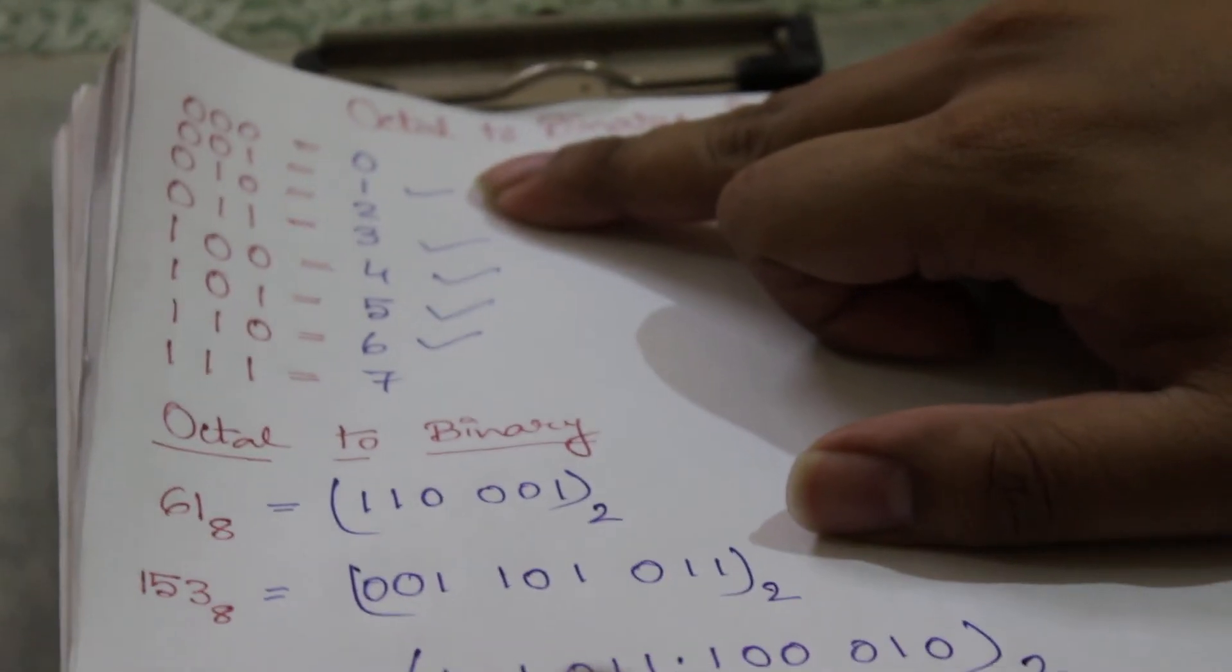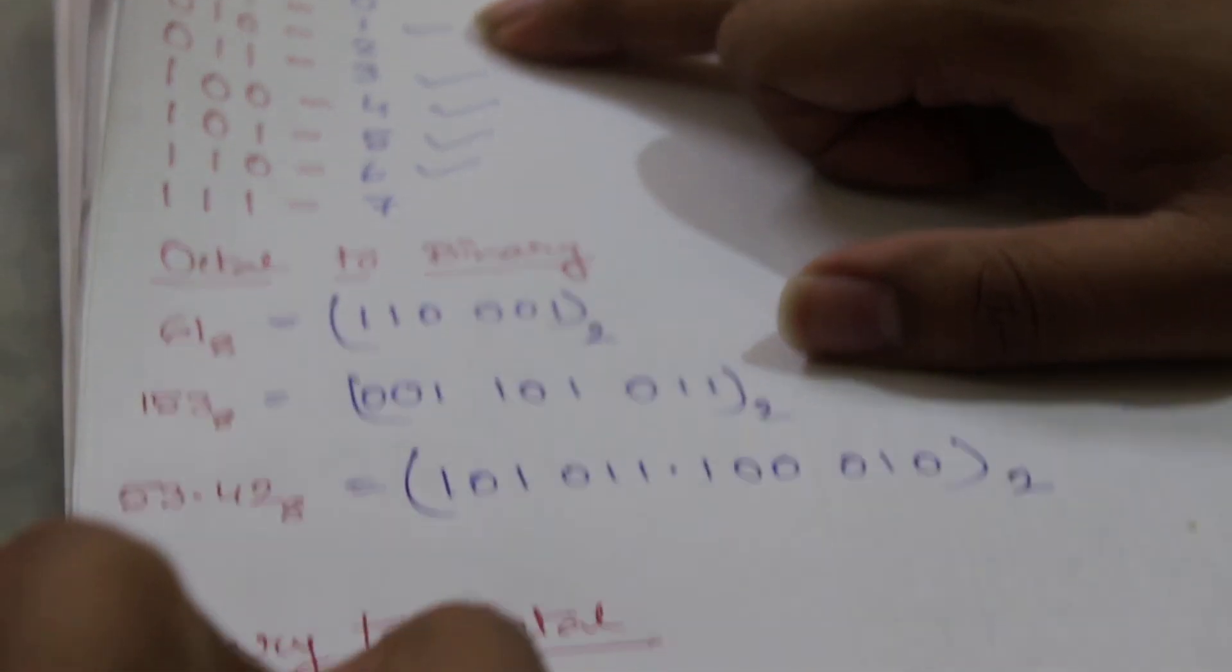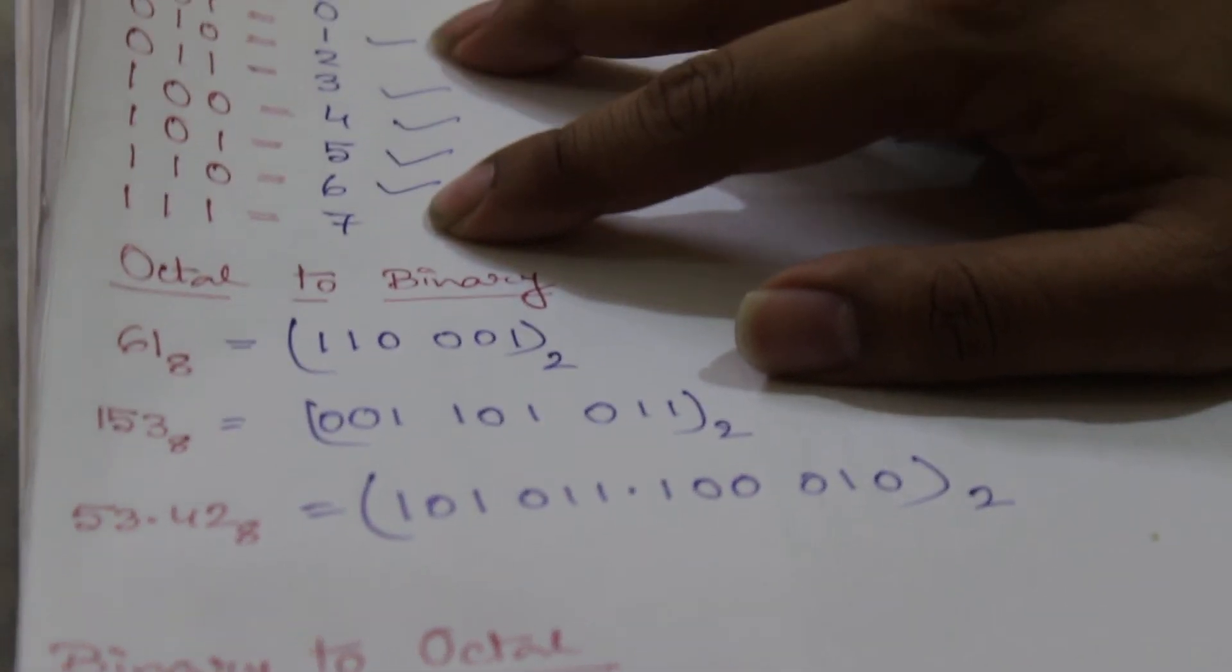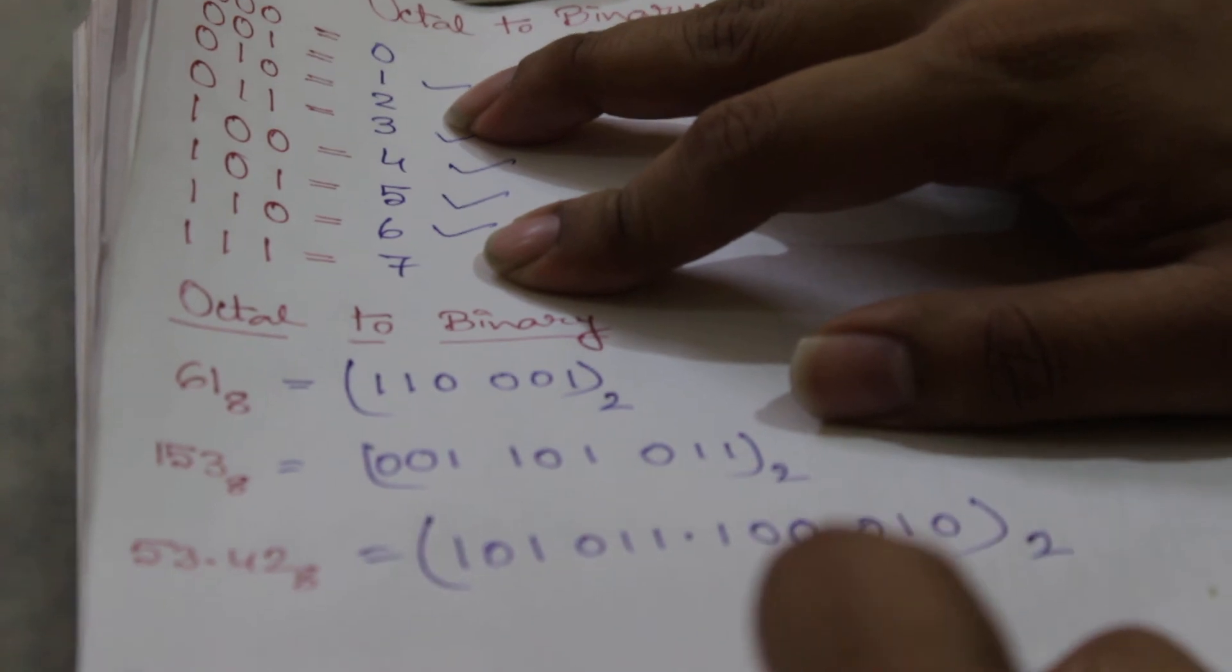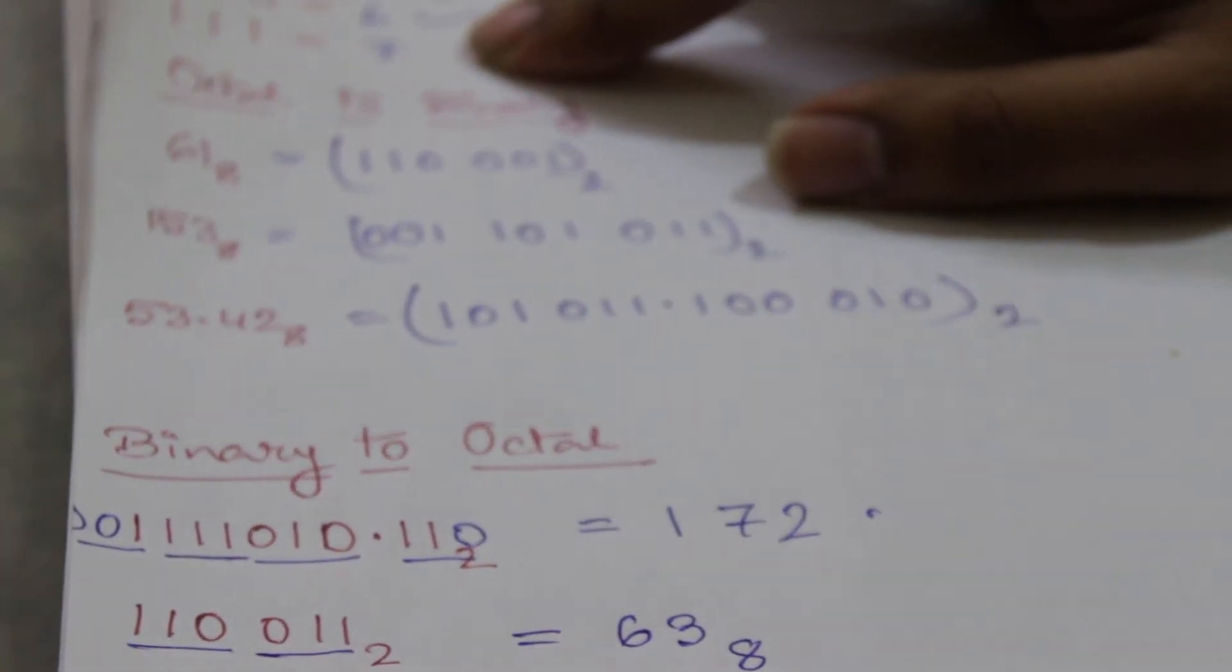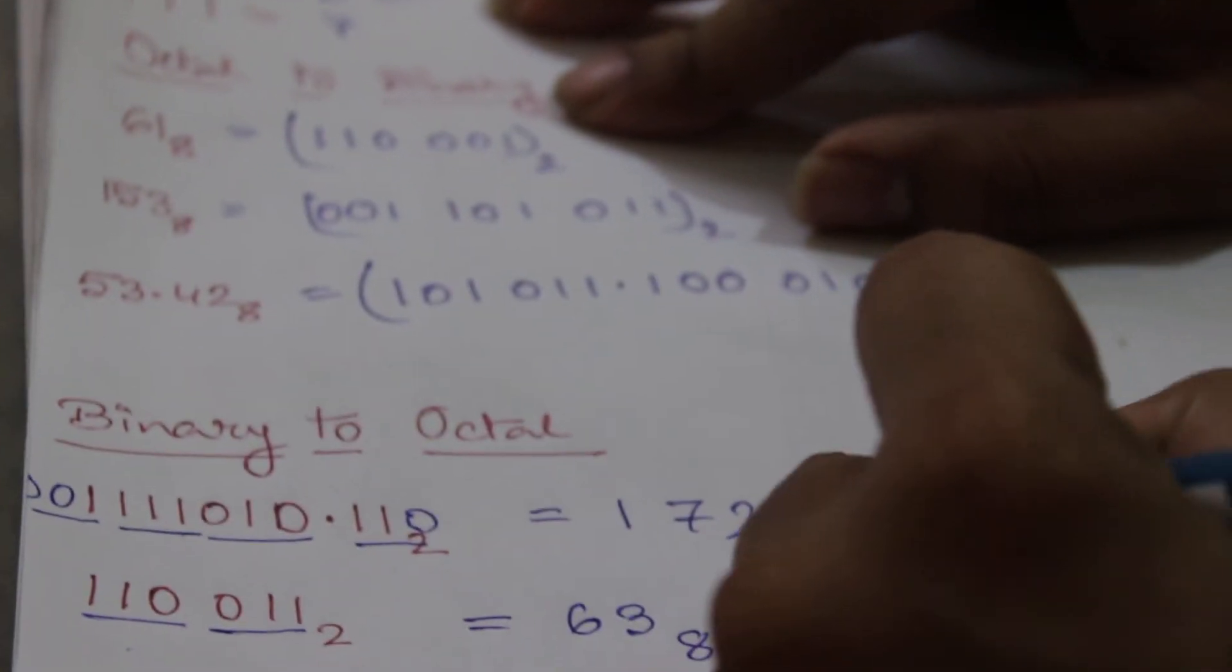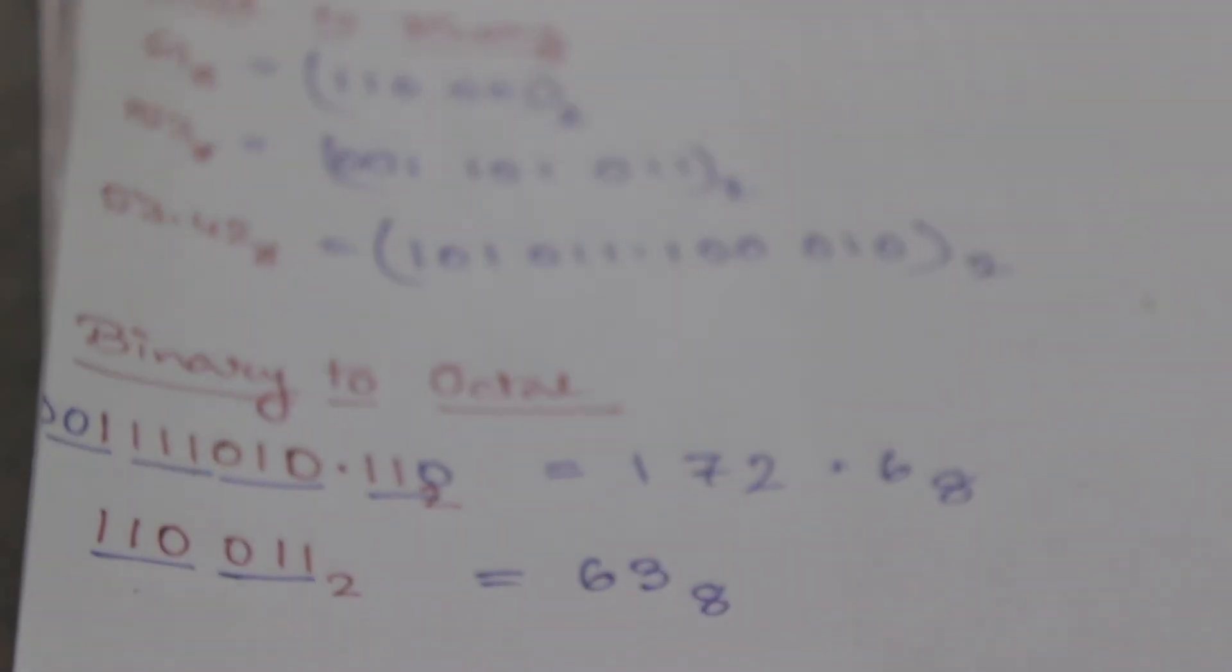Now first is zero zero zero one, that means one. Next is one one one, that means seven. Next is zero one zero, that means two, then the point, then one one zero means six. So this is the octal equivalent of this number.